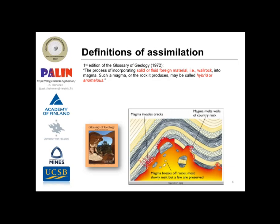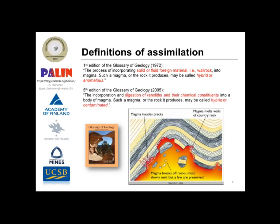The evolution of the term in the Glossary of Geology has been quite something. In the latest edition published as a book, it says assimilation is the incorporation and digestion of xenoliths and their chemical constituents into a body of magma; such a magma or the rock it produces may be called hybrid or contaminated. This definition doesn't account for magma being contaminated in the contact — it only covers the incorporation and digestion of xenoliths, which is quite a narrow definition.